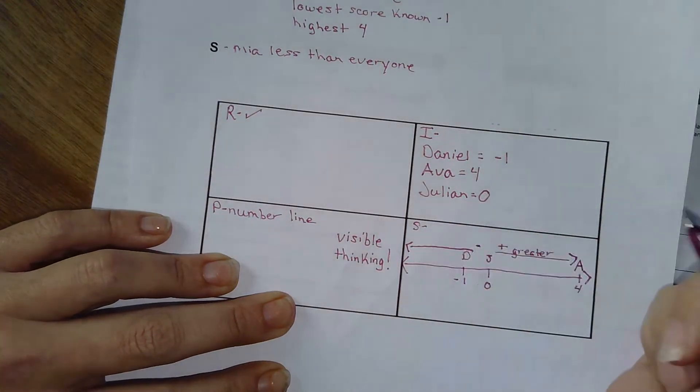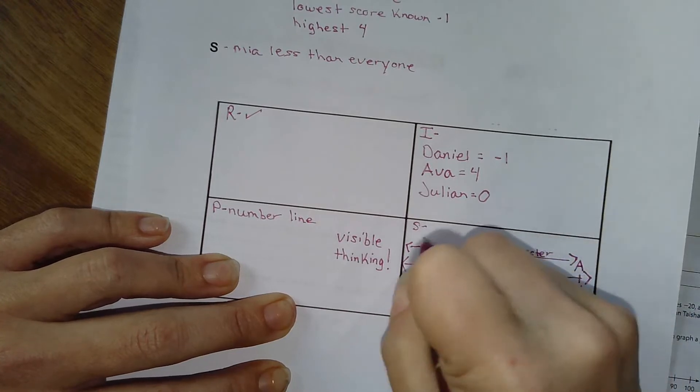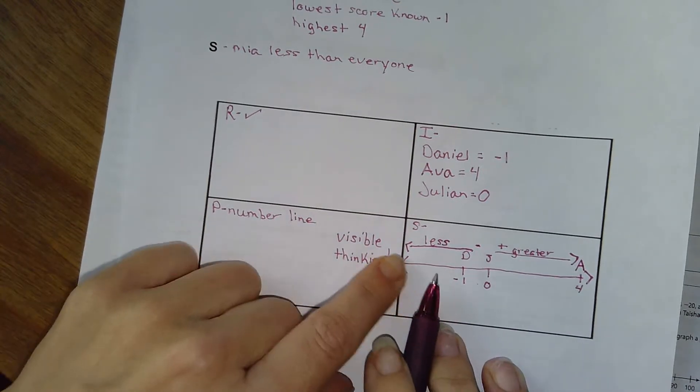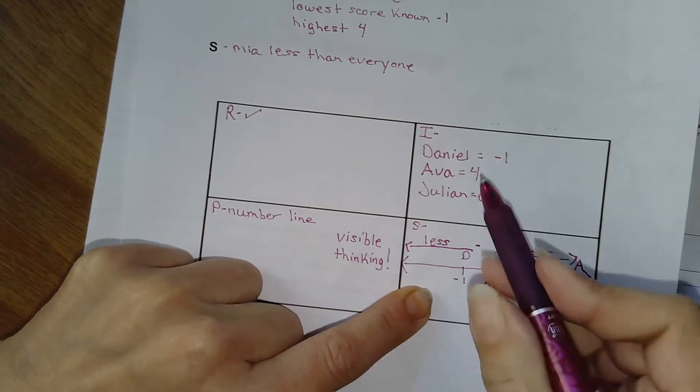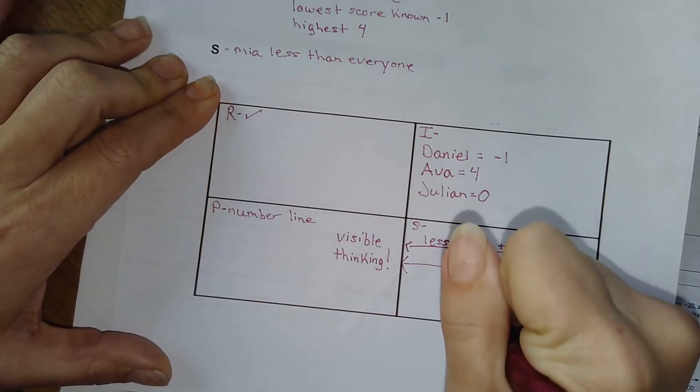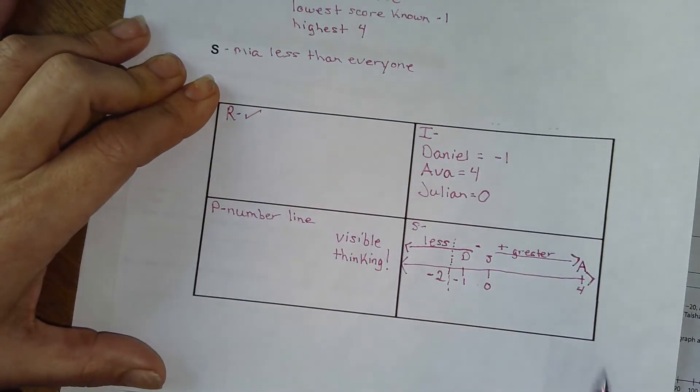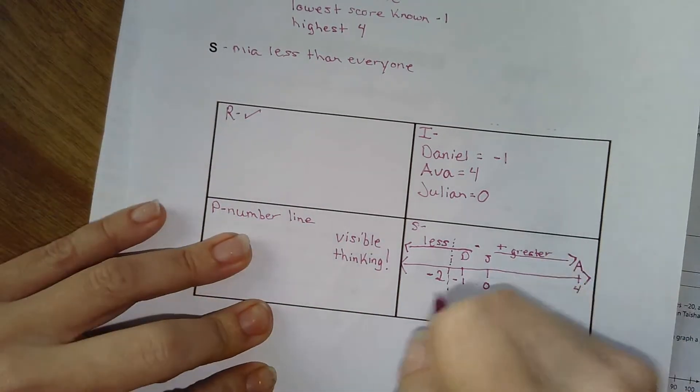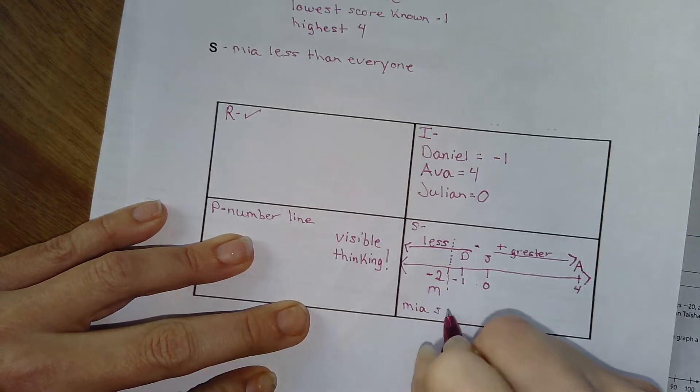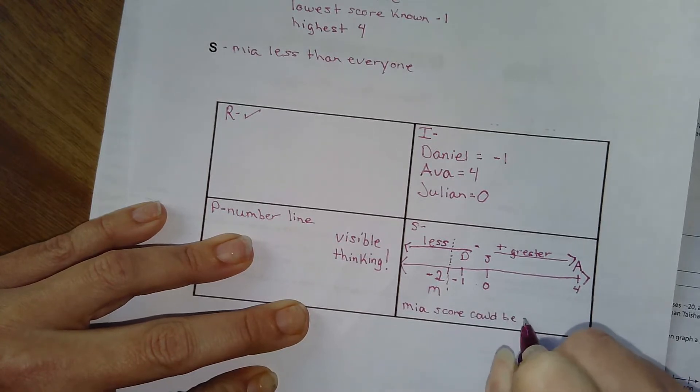And I'm going to go to the left. And I know that to the left, each way it goes, it's lesser. I'm not sure if that's a word, but we'll go for it. Right. Let's put less. Okay. So, well, I know that Mia's score is less than everybody, right? So her score could be a negative two. I would rather owe somebody a dollar than owe them $2, right? So Mia's score could be negative two.